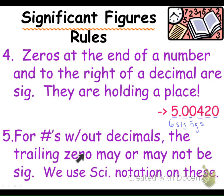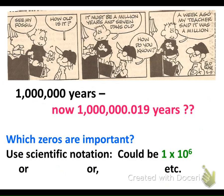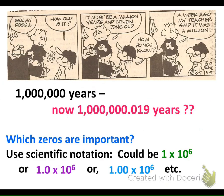The last rule is for numbers without decimals: the trailing zero may or may not be significant. If a number did not have a decimal point, we would not know if that zero was significant or not. There has to be a decimal point present for us to identify if that's a significant figure or not. So what we're going to do is use scientific notation on those. If we had a decimal point, all of those values would be significant, so that's why we use scientific notation.